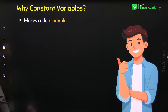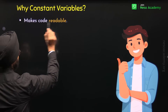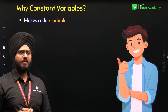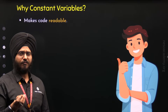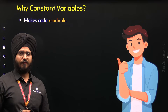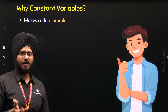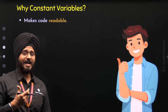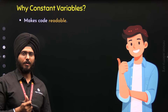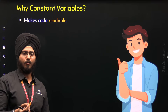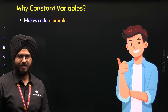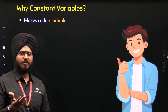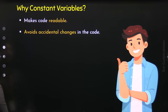The first reason is that it makes code readable. Instead of using 3.14159 directly in the code, if we use the name pi, it makes the code more readable, because we humans relate to names more easily than to constants like 3.14159. So to make the code more readable, we can use constant variables.